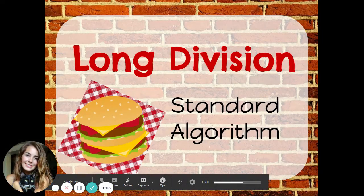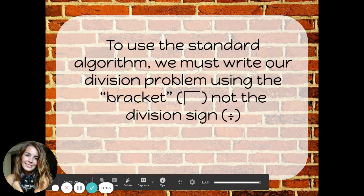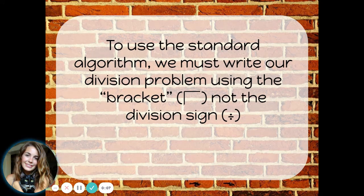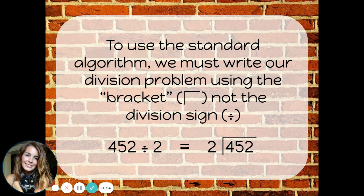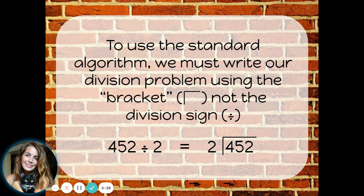Long division using the standard algorithm. To use the standard algorithm, we must write our division problem using the bracket, not the division sign. So instead of writing 452 divided by 2 with a division sign, I'm going to write it using a bracket. Remember, the big number, the dividend, goes under the bracket. 452 is our dividend and the little number, the divisor, goes out in front. The answer or quotient will go on top of the bracket.